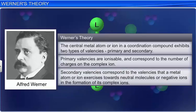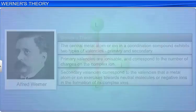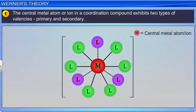His explanation of complex formation is based on some postulates. The first postulate is that the central metal atom or ion in a coordination compound exhibits two types of valencies: primary and secondary.